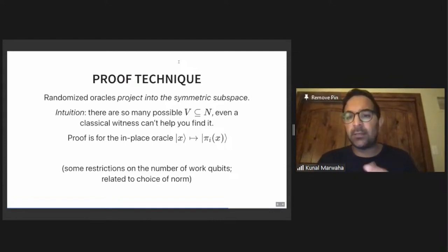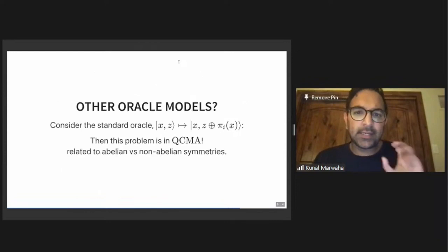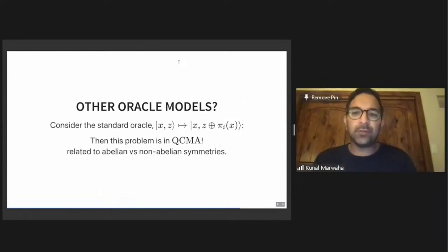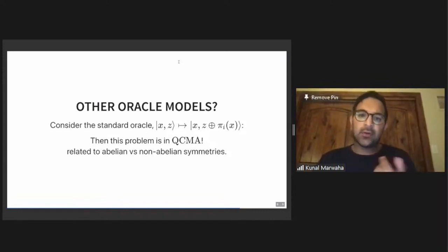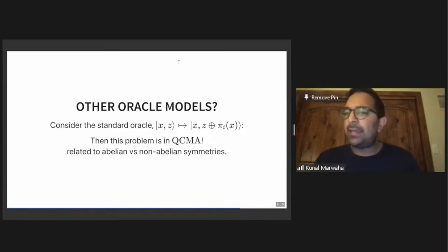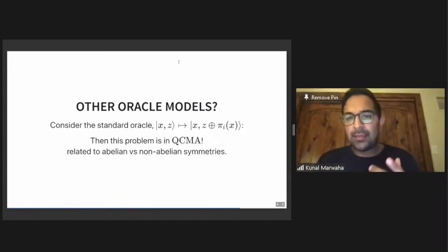There are some restrictions based on the number of work qubits you can use when querying the oracle, related to the choice of norm — like trace distance versus diamond norm. You might ask: what about other oracle models? If you consider the standard oracle, this problem is actually in QCMA. This is related to abelian versus non-abelian symmetries. In the standard oracle, you are XOR-ing your output, and XOR is abelian — these groups are much easier to characterize with a lot more structure. But for the in-place oracle, the input is mapped directly to the output, so this kind of permutation can form non-abelian symmetries.